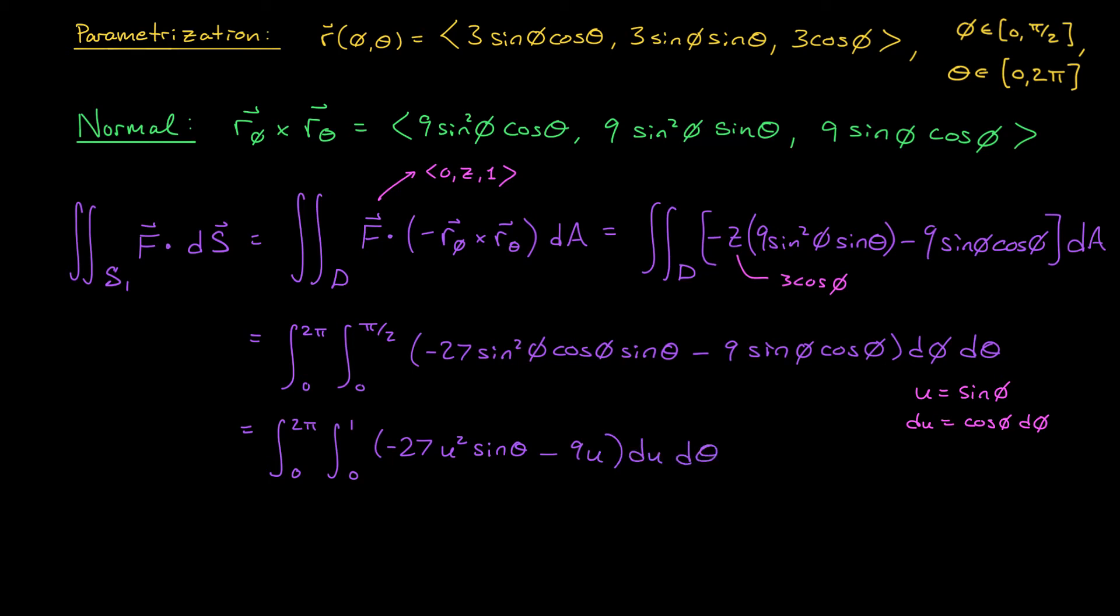An antiderivative of this expression with respect to u is −9u³ sin θ − 9u²/2, and we evaluate from 0 to 1. Of course, we still have our integral from 0 to 2π dθ. Subbing in our bounds, we have the integral from 0 to 2π of −9 sin θ − 9/2 dθ, and a very quick computation gives a final answer of −9π.